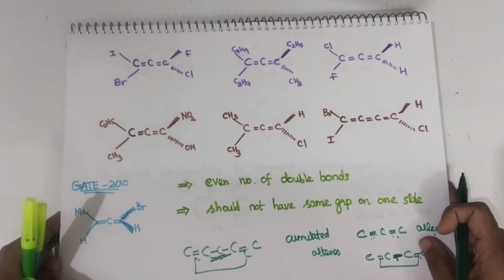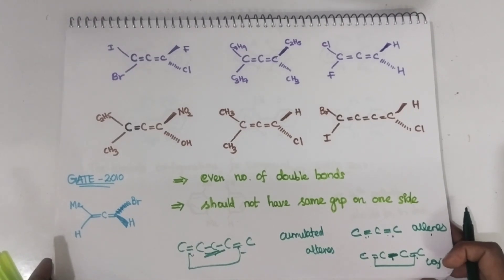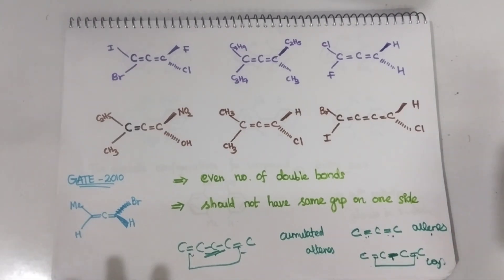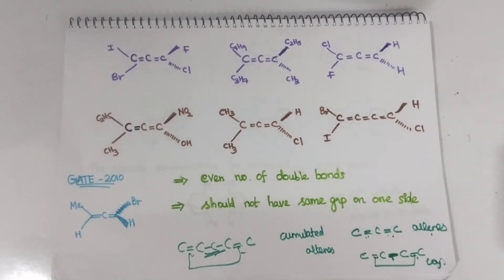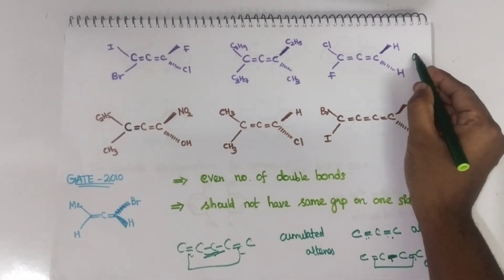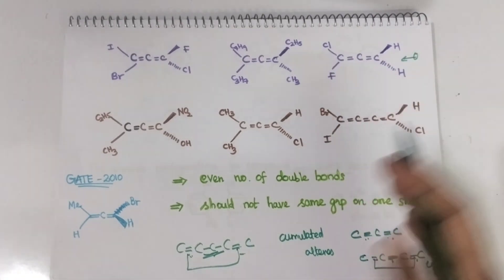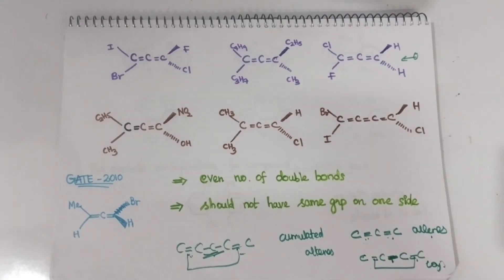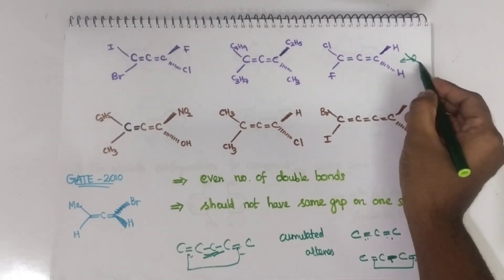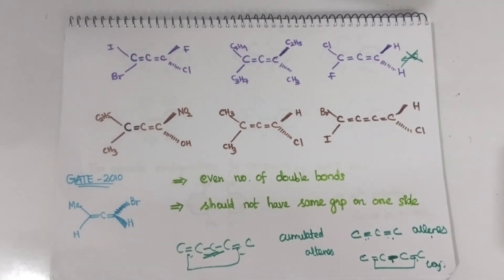This is the basic introduction about allenes. Now, in order to find out the R/S configuration in spirane system and allene system, there is a trick. Everyone will say you have to look from one side, identify which groups are present, convert them into Fischer projection, and then find out the R/S configuration. But actually, I am going to give you a simple trick.